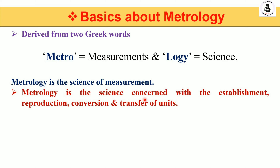Metrology is the science concerned with the establishment of new developments — some process, machine, or product being developed. It also covers reproduction: by the science of measurement you should know about reproduction and production systems. You need to measure that production system, the final shape and size of the product, and the convergence and transfer of units. These are all terminologies used in the science of measurement.